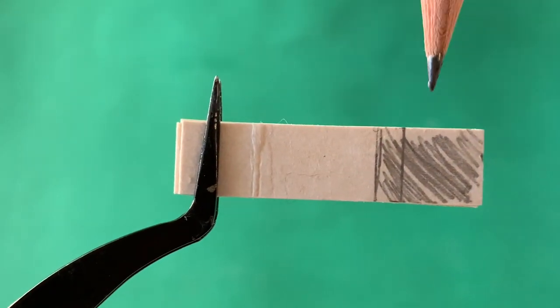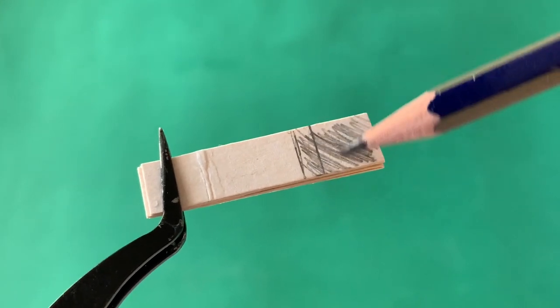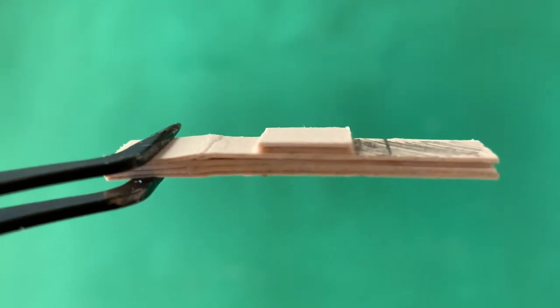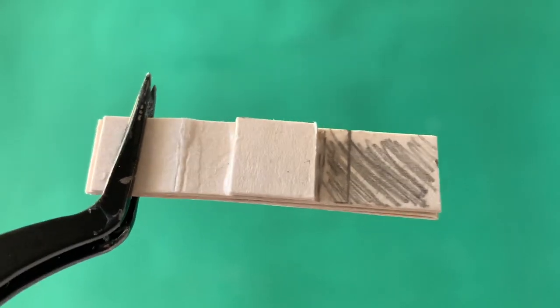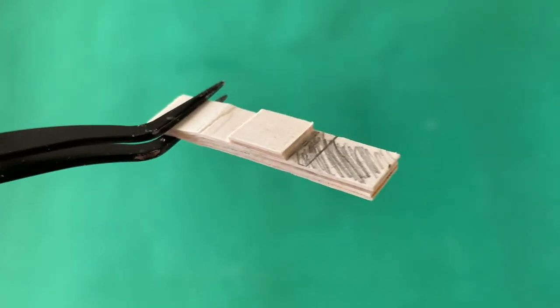On the opposite end, measure in 1.5cm and block this area out. Now adhere two 1cm squares up against your shaded section. This will enable the catcher to catch the drawer and keep it shut.